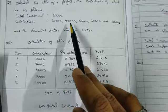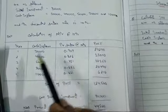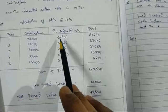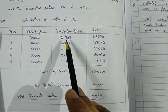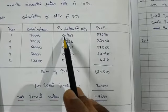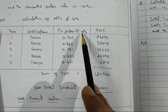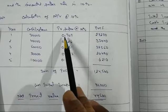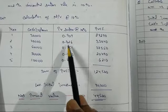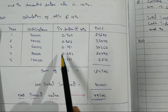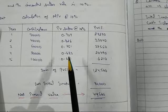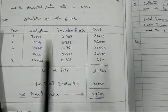Then we fill in the PV factor at 10 percent. I have provided the PV factor table, so you can refer to that. From the table: year one is 0.909, year two is 0.826, year three is 0.751, year four is 0.683, and year five is 0.621.